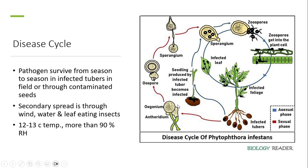Sporangia and zoospores germinate on the plant surface, infecting all the leaves and foliage. The infection then spreads to the tubers. This completes the asexual phase of the disease cycle.